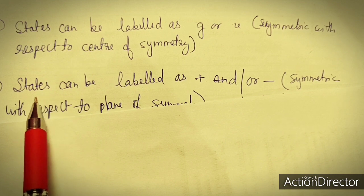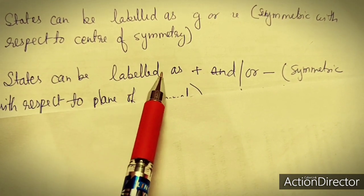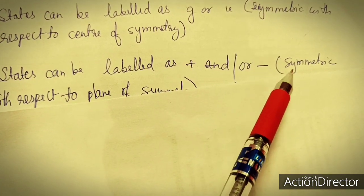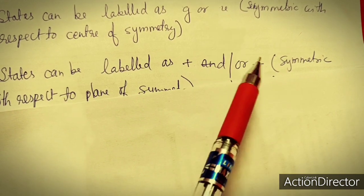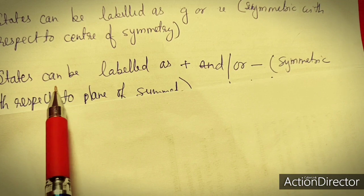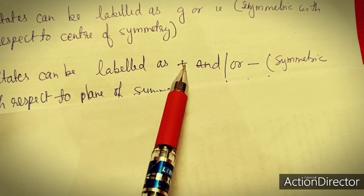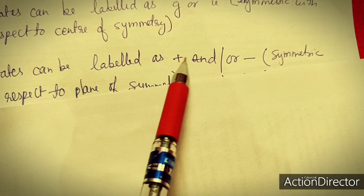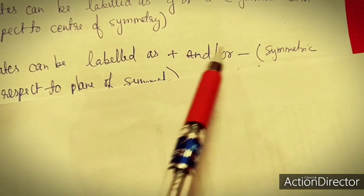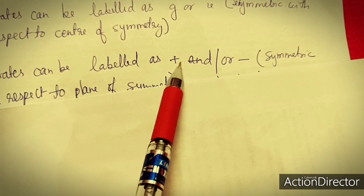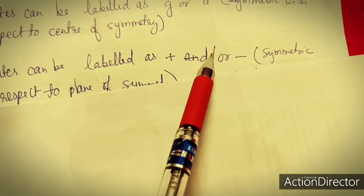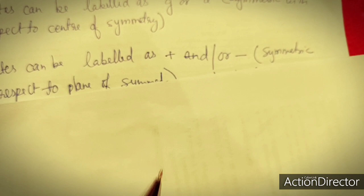States or terms can also be labeled as plus or minus, meaning symmetric or asymmetric with respect to the plane of symmetry. In atomic terms we used 1 and 2 in place of plus and minus — like T1G, T2G, A1G, A2G — and 1 and 2 represent plus and minus in diatomic molecules.